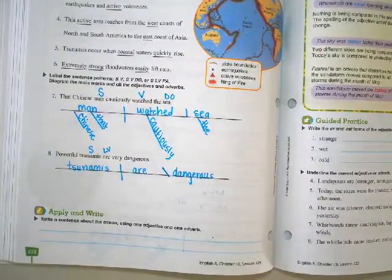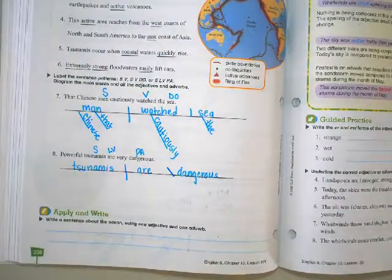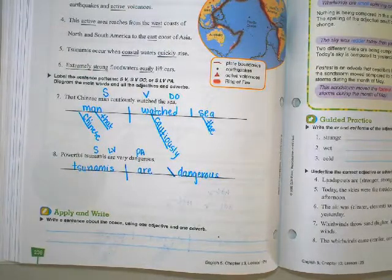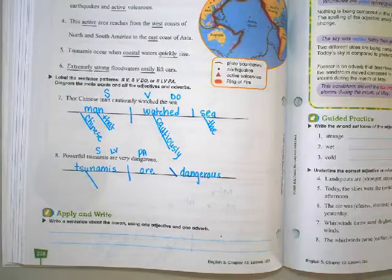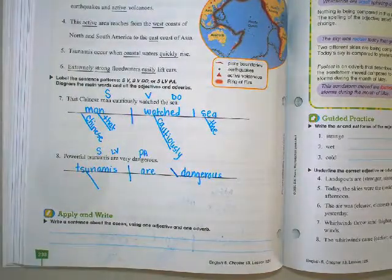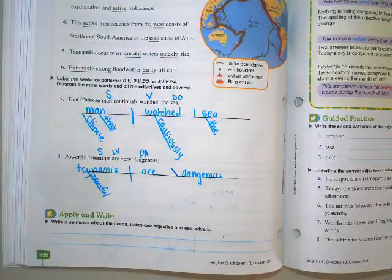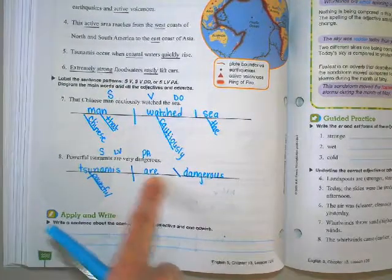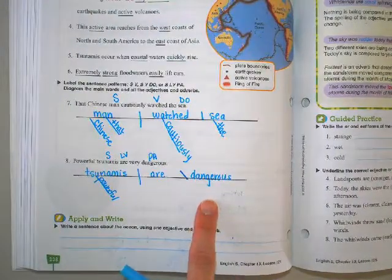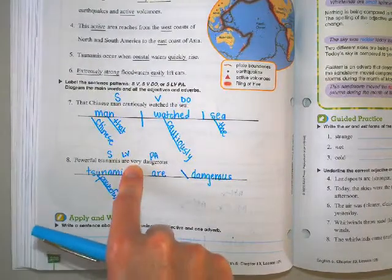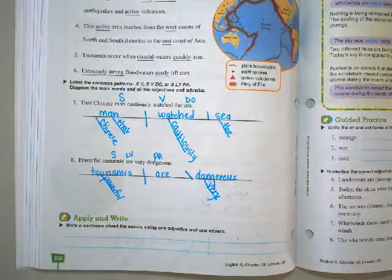All right. Now we go back in the sentence. Excuse me. I forgot to put the P-A for predicate adjective. All right. So now we're going to put in our describing words. Any words that describe tsunamis? Yes. They are powerful. Let's see. I have to stand up for this one. There's nothing that describes the linking verb are. But there is a word that describes the predicate adjective. How dangerous are they? They're very dangerous. Just like that.